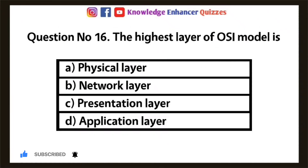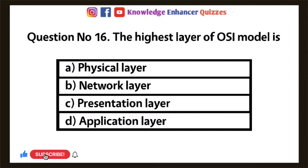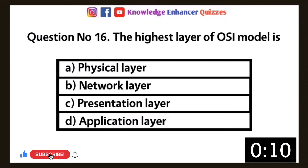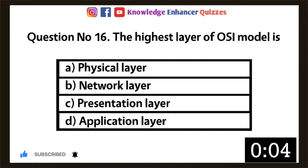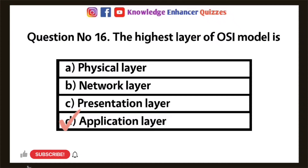Question 16: The highest layer of the OSI model is — Option A: Physical layer, Option B: Network layer, Option C: Presentation layer, Option D: Application layer. Option D is the right answer.